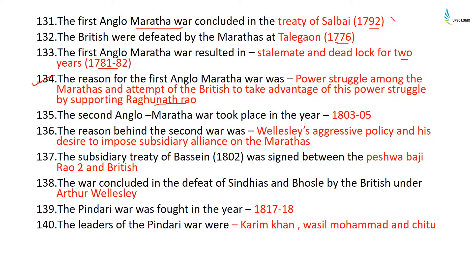The Treaty of Salbai ended the First Anglo-Maratha War. The Second Anglo-Maratha War took place from 1803 to 1805. The reason was Wellesley's aggressive policy and desire to impose subsidiary alliance on the Marathas. The subsidiary Treaty of Bassein 1802 was signed between Peshwa Baji Rao II and the British. The war concluded in the defeat of Sindhias and Bhonsles by the British under Arthur Wellesley, who was also involved in the killing of Tipu Sultan.